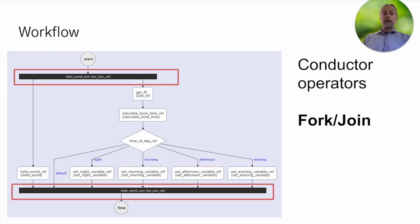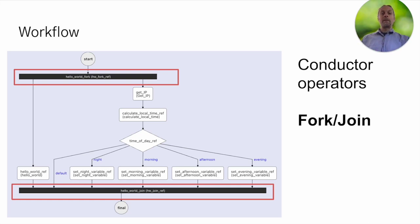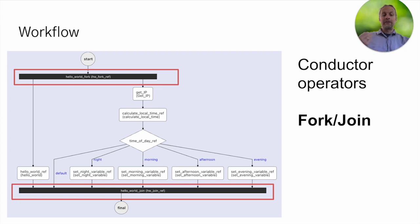We also have the idea of a fork. A fork lets us run sets of tasks asynchronously — they don't rely on one another, so why have them run serially? We can run them in parallel. There is the idea of a fork-join, and there's also the idea of a dynamic fork. The fork-join is defined when you define your workflow, while the dynamic fork has its number of iterations defined at runtime.